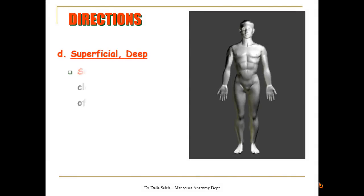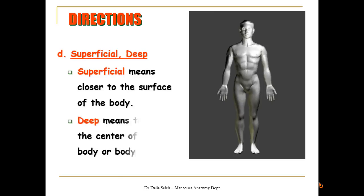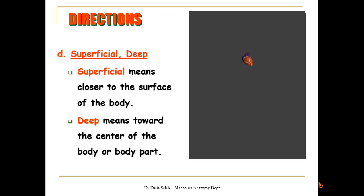Also, we have superficial, and opposite to it is the word deep. Superficial means closer to the surface of the body, or closer to the skin. So, the skin is the most superficial layer covering the body. While deep means towards the center of the body. So, we have the skeleton lies deep to the skin, and the heart lies deep to the skeleton. Think of it like the layers making the onion, so you have many layers, one superficial to the other.